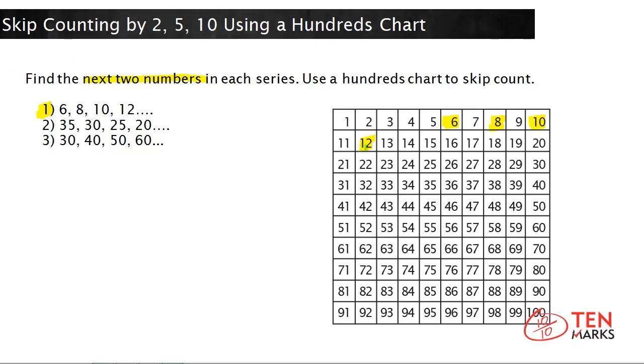So if we find every other number, we skip this number. We skip 13 and you land on 14. Every other number from here would be skipping 15 and landing on 16. These are also the next two even numbers as well. So that means the missing numbers here are 14 and 16.